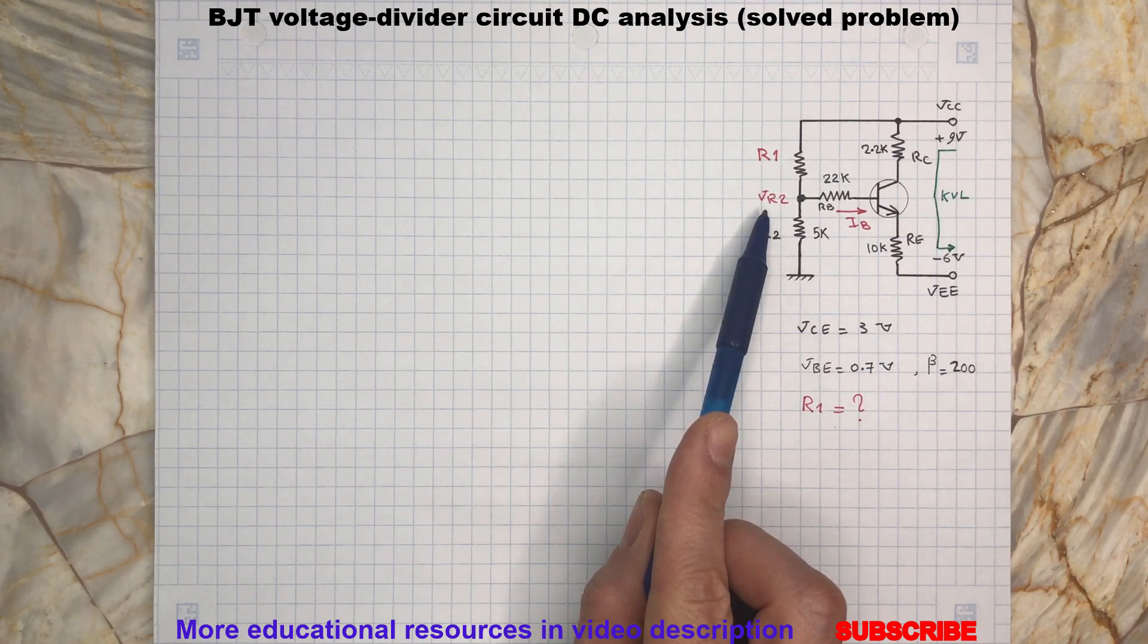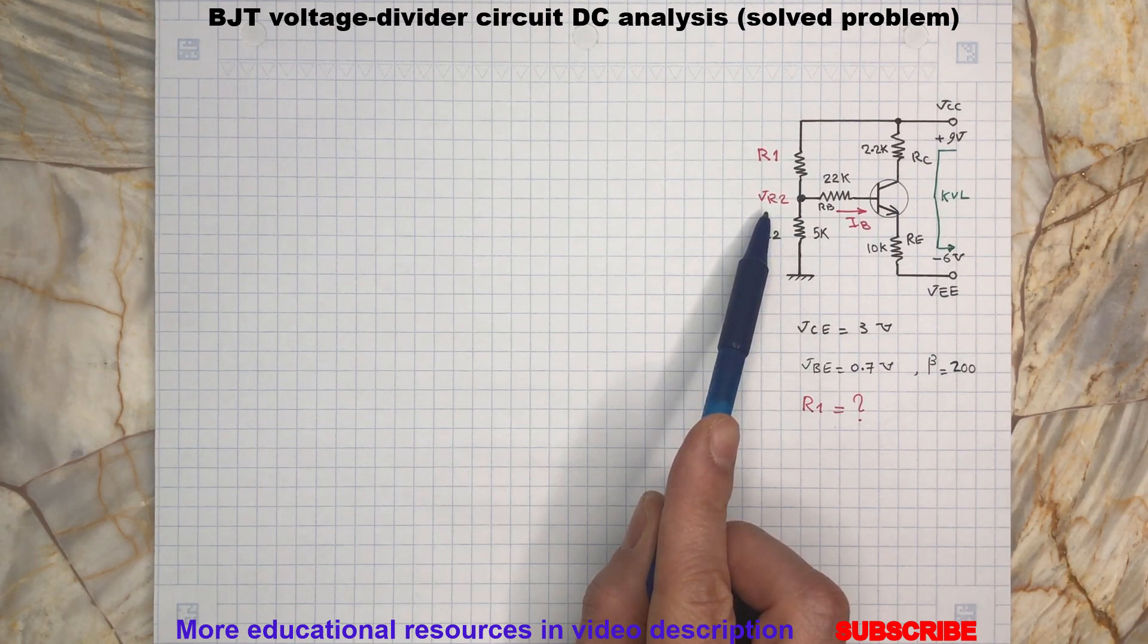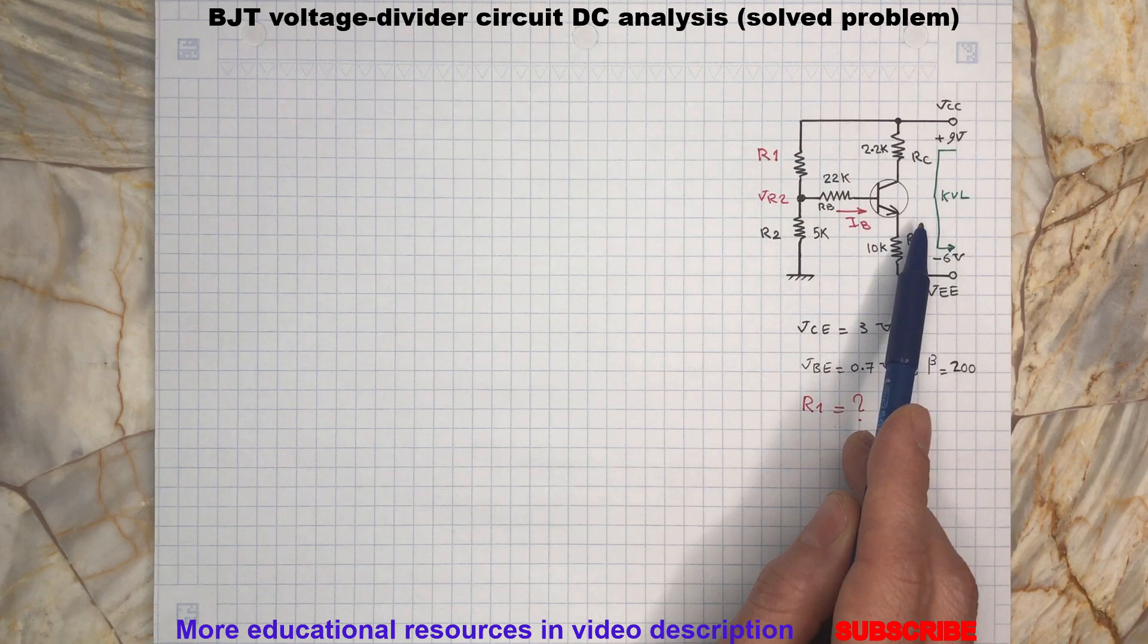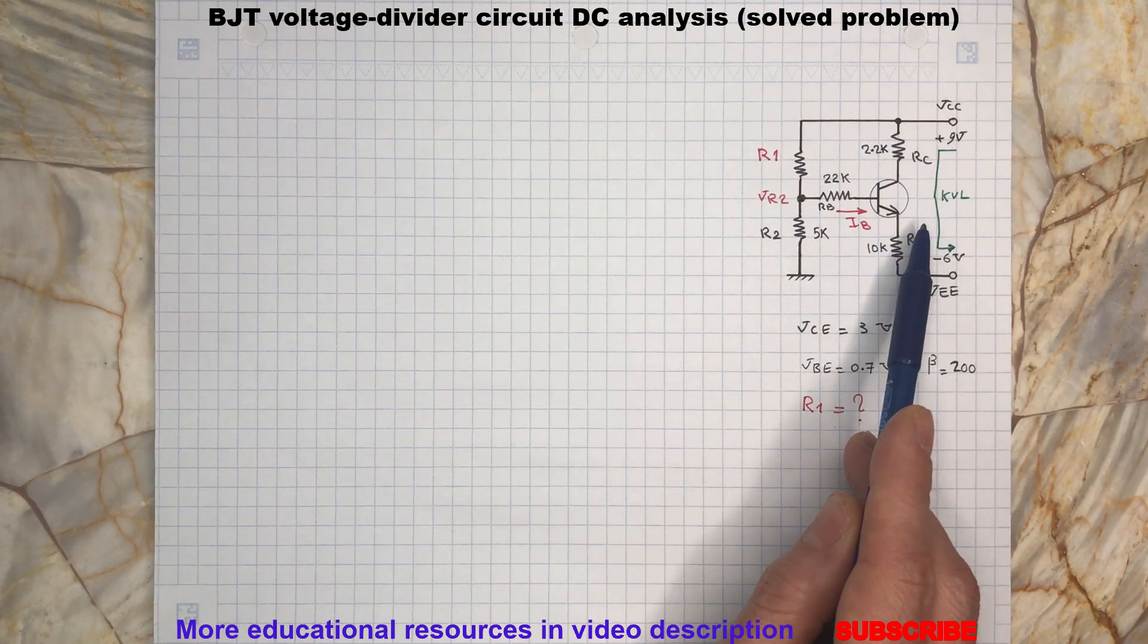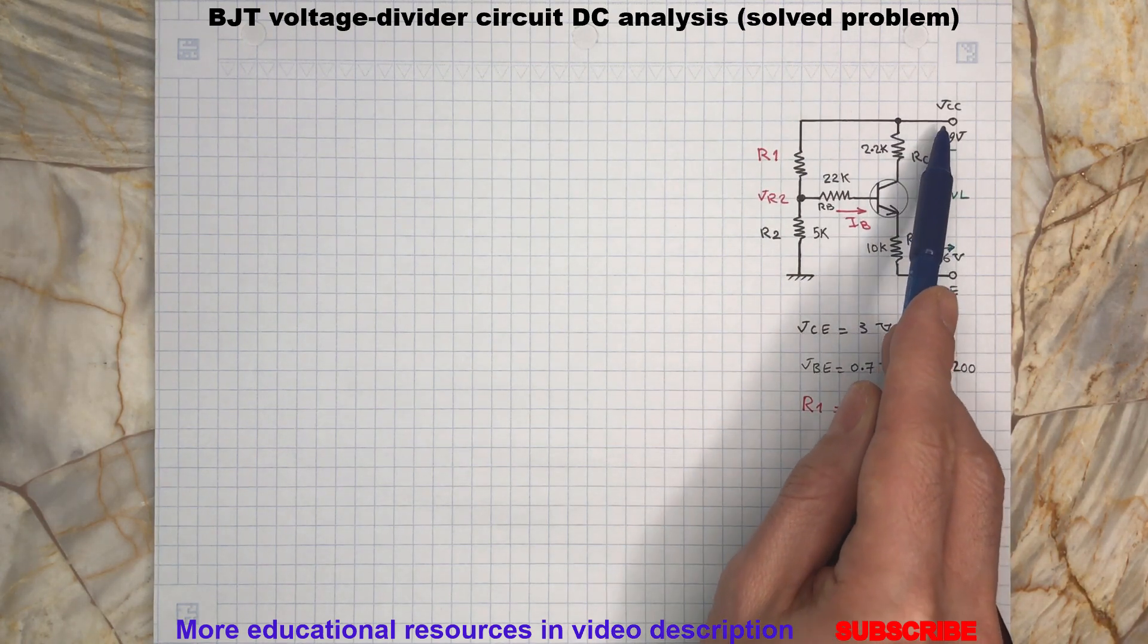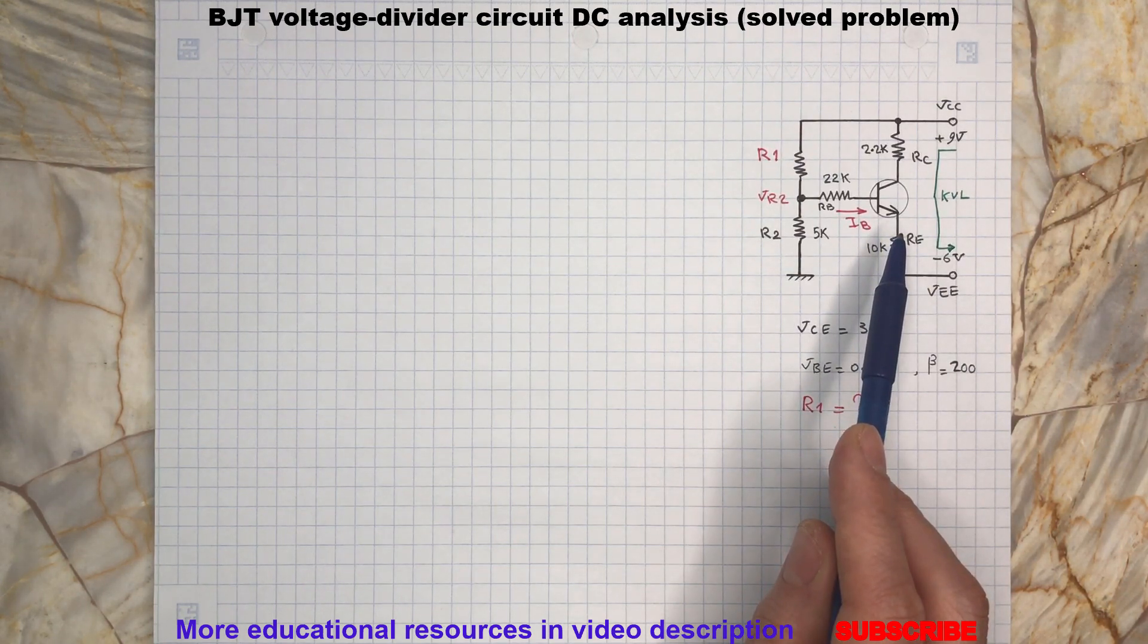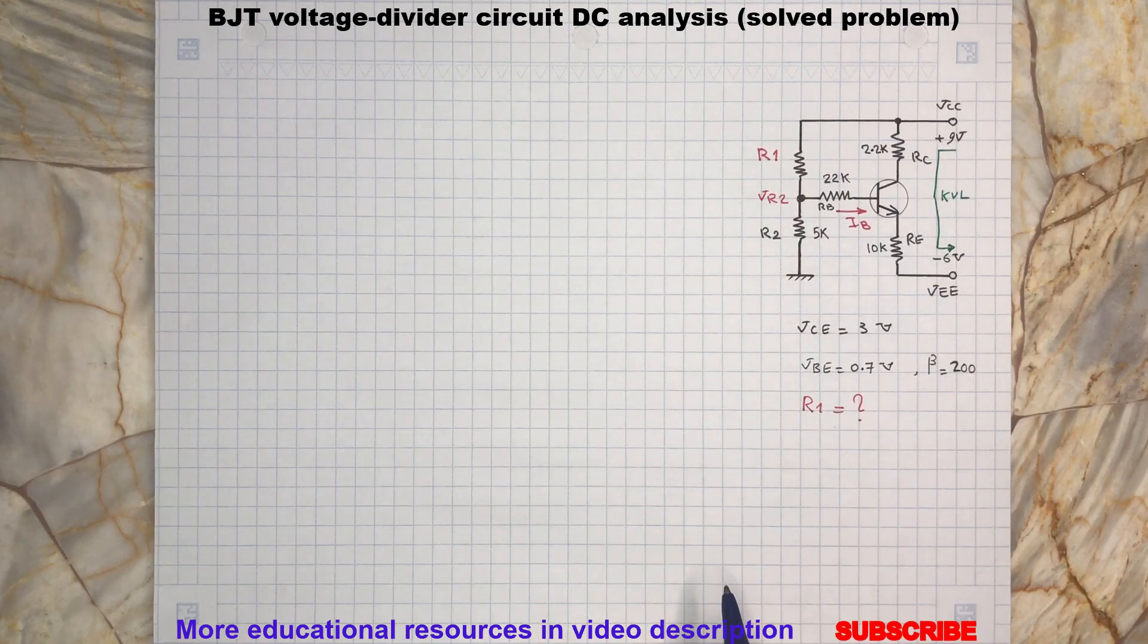Since the resistor R2 is given, then by using the voltage divider formula with a good approximation I can calculate R1. Since we know the voltage at collector emitter, then we can write a KVL from the positive voltage supply to negative voltage supply. This will help to determine the current flowing through the collector and emitter of this transistor. So let's write the KVL.